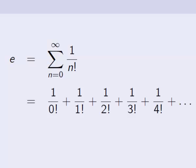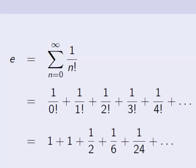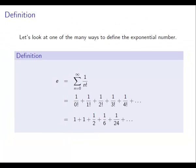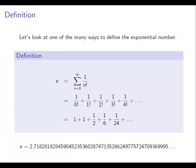Of course, remembering what the factorial notation means, we can write this as follows. The decimal expansion of E starts off as 2.7182818, and so on, as we can see here. So we can see E is approximately 2.7 if you want to be simple.